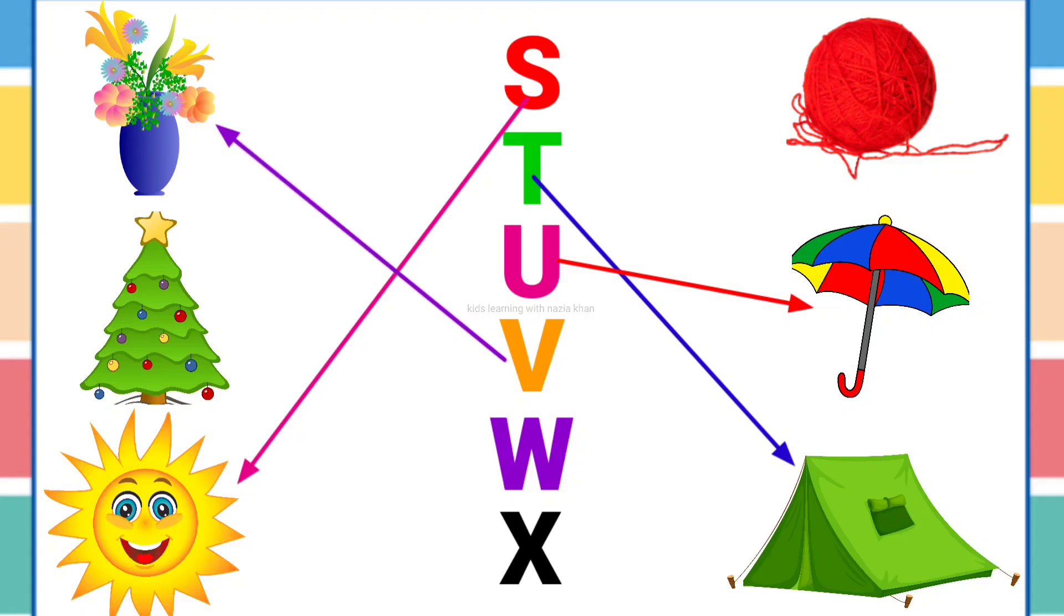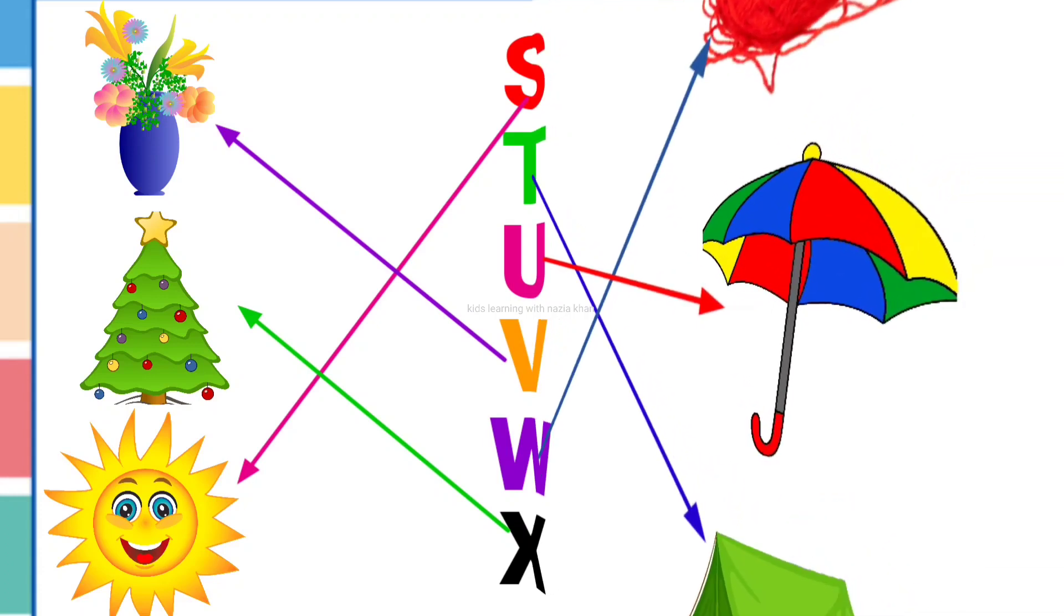V is for vase. V, V, vase. W is for wool. W, W, wool. X is for x-mas tree. X, X, x-mas tree.